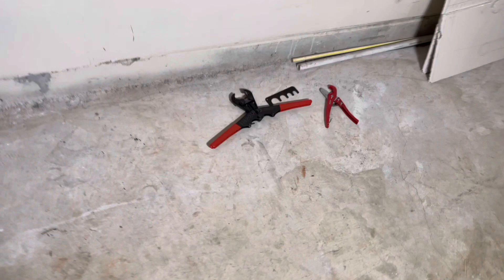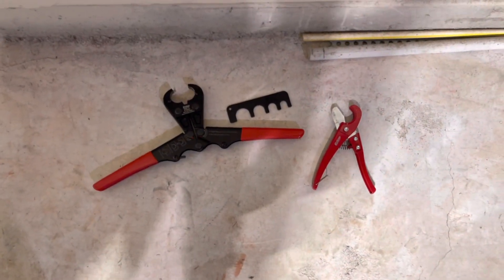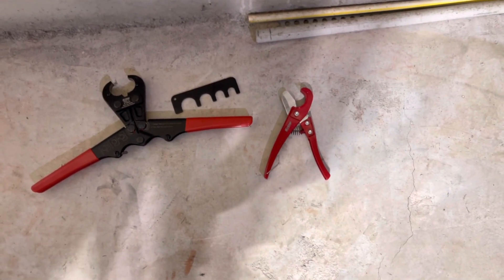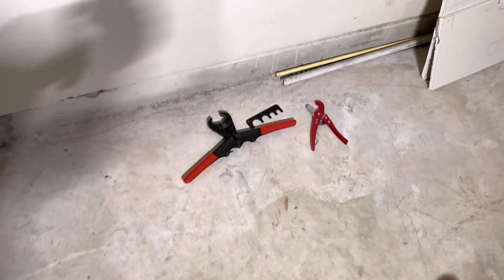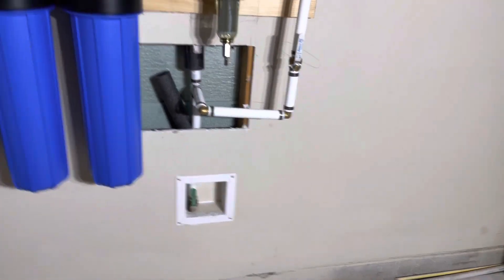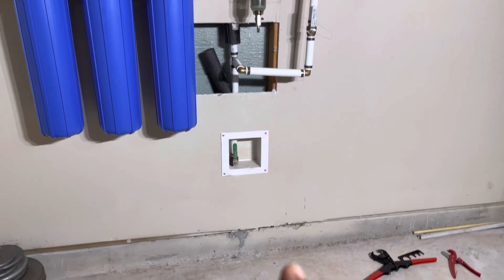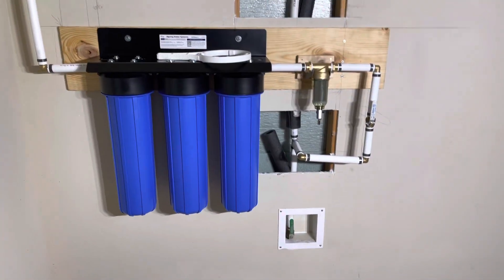Also the clippers for PEX - it came as a set from Amazon. How I did it was I turned off the main which is right there, and also turned off the main on the sidewalk coming in from the street.